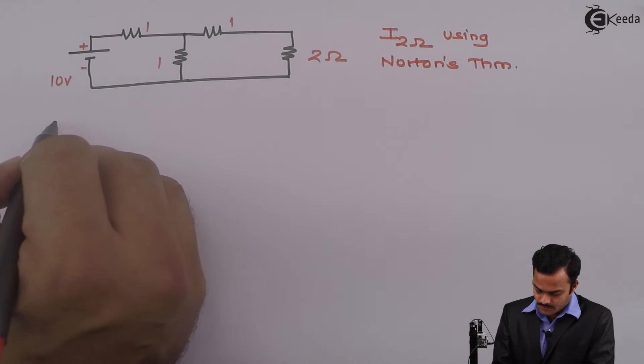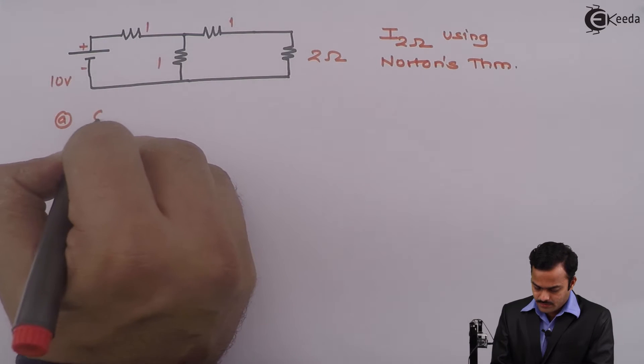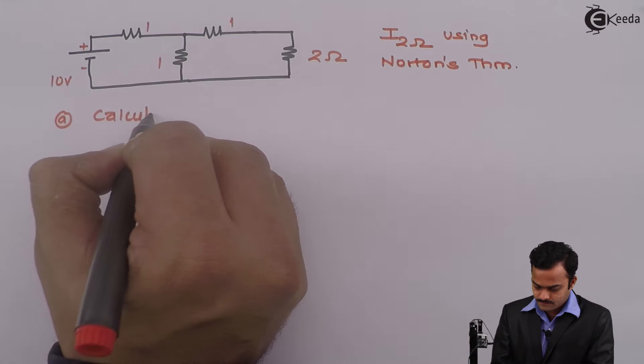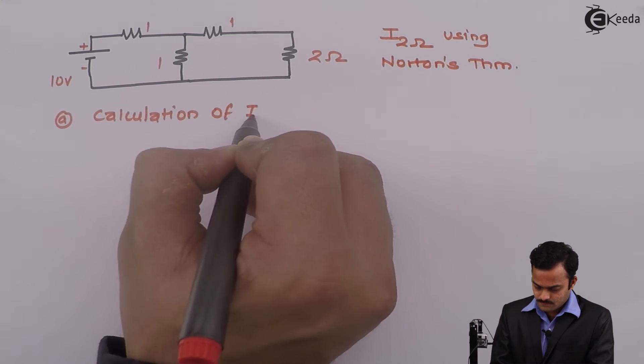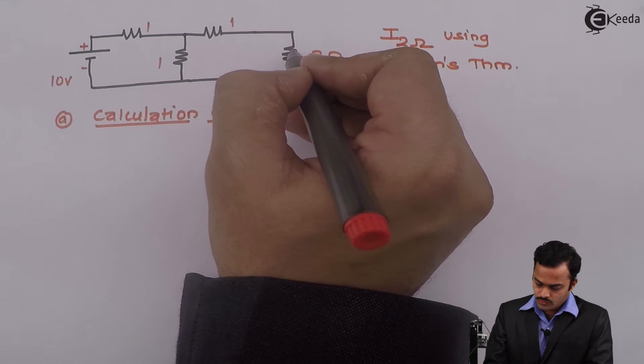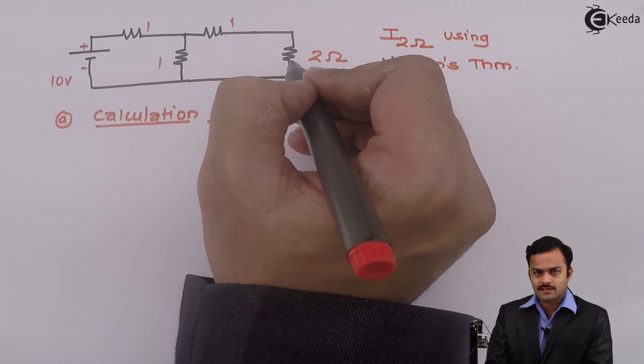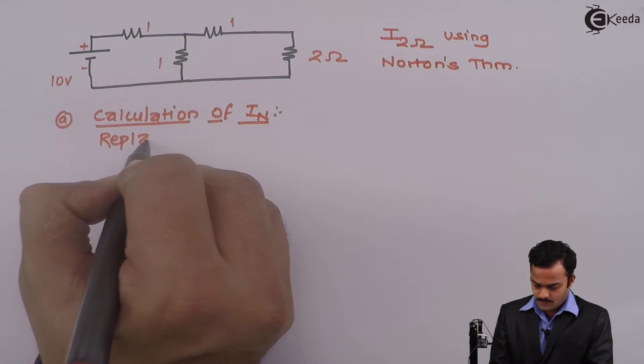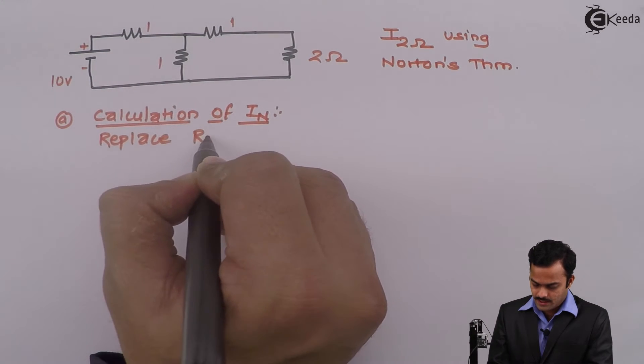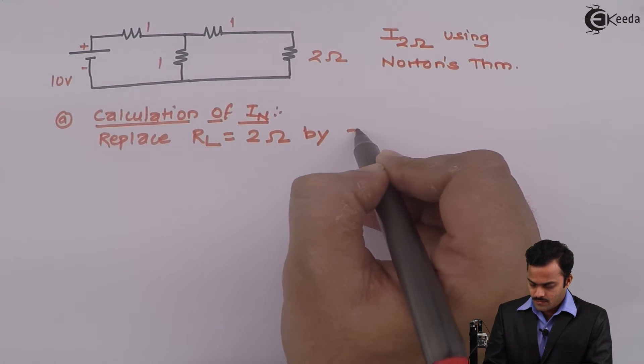Let's see how to solve. First step is calculation of IN. What we need to do is we need to replace this load resistance as a short circuit link, to replace RL. In our case it is two ohm by a short circuit link.